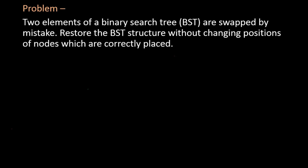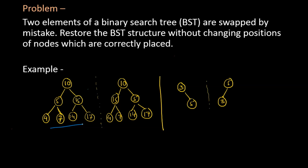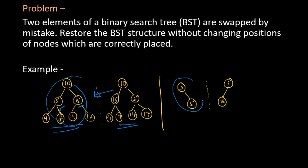Let's look at a couple of examples. This is the original binary search tree. If nodes 5 and 15 were swapped, the modified tree will look like this. We have to recover the original tree from this modified tree. Similarly, in the second example, we have to recover the original binary search tree from this tree.